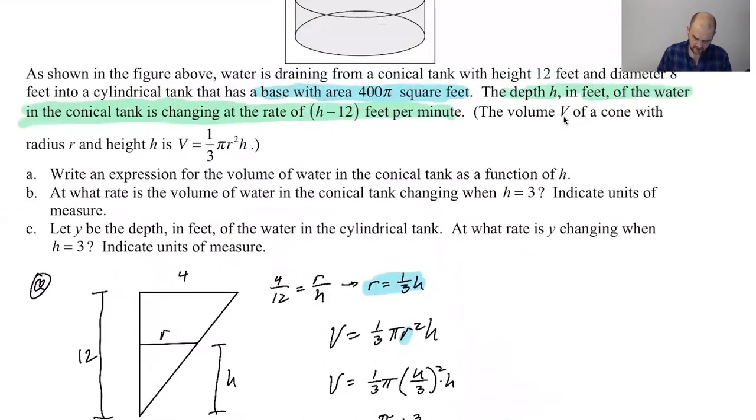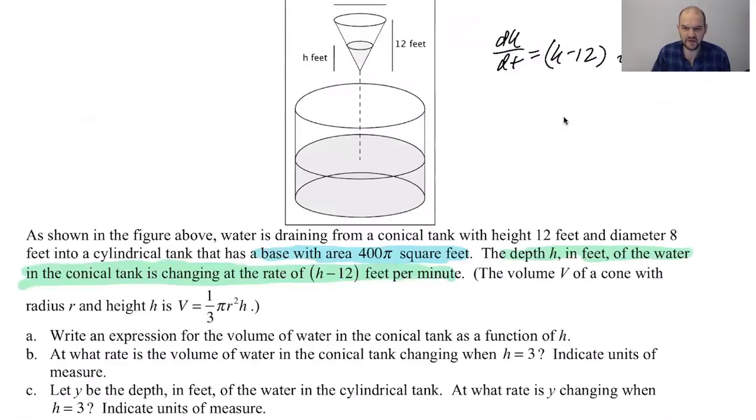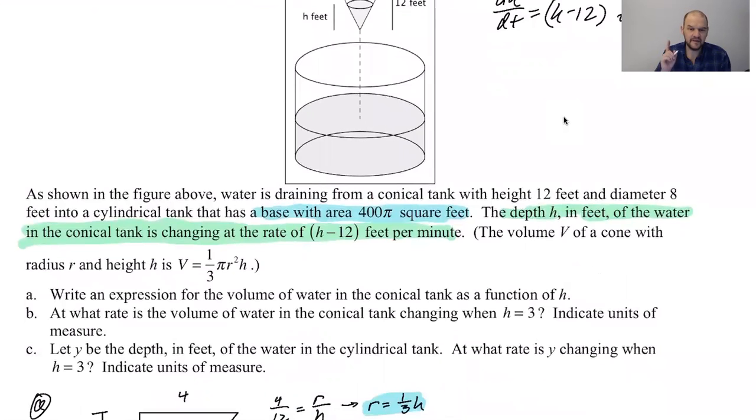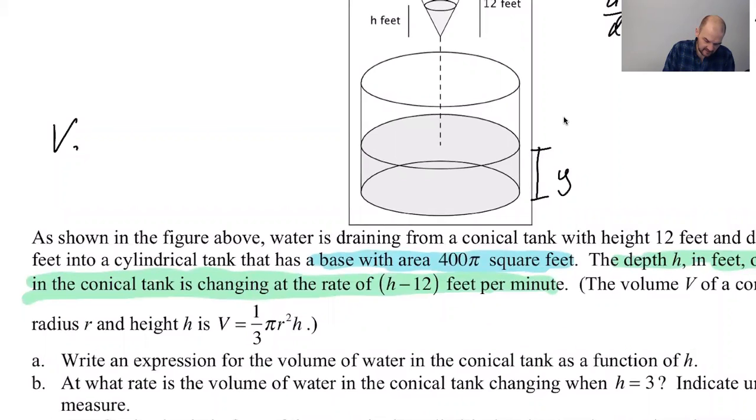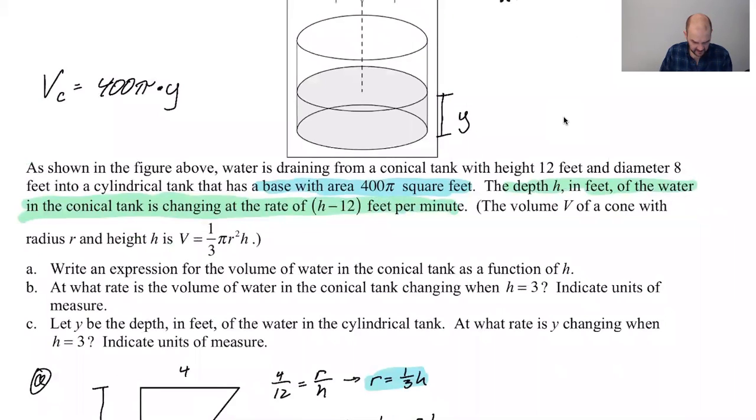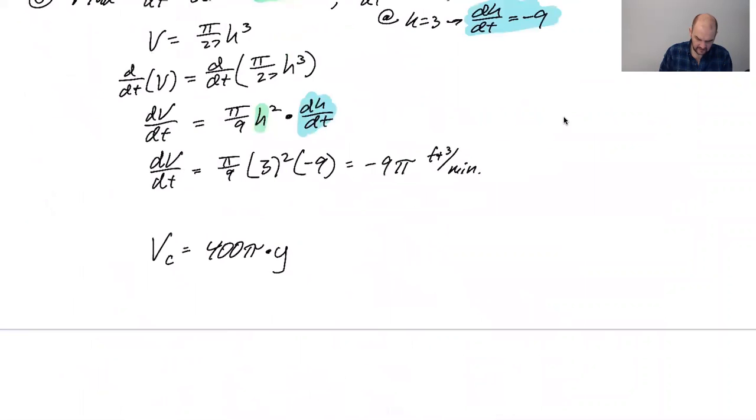So now we're going to let y be the depth of water in the cylindrical tank. So y is the amount of water, the depth of the water there. So this distance is going to be Y. And if you remember what we said, the volume of this is going to be the area of the base times the height. Now we know the height is Y. The area of the base doesn't change. It's always 400 pi. So that doesn't really depend on anything. So for the cylindrical tank, V cylindrical is going to be the area of the base times Y. So what's the question? At what rate is Y changing when H is equal to three? Indicate units of measure.